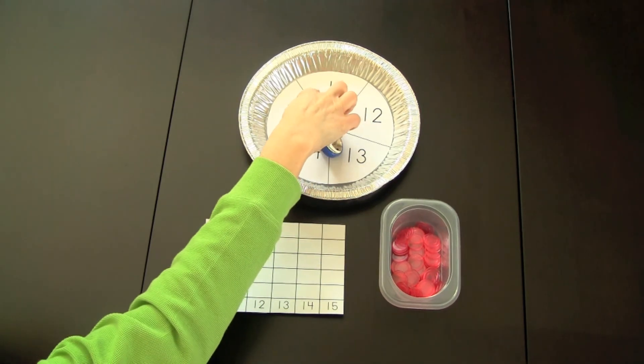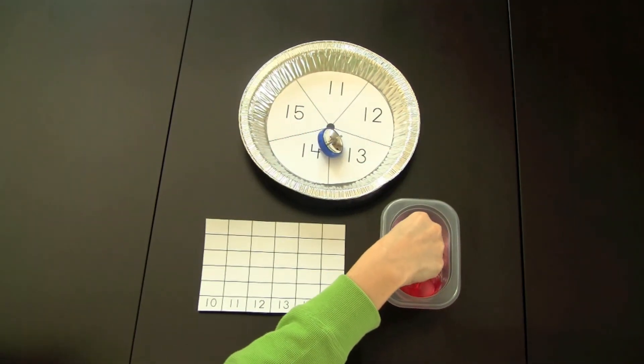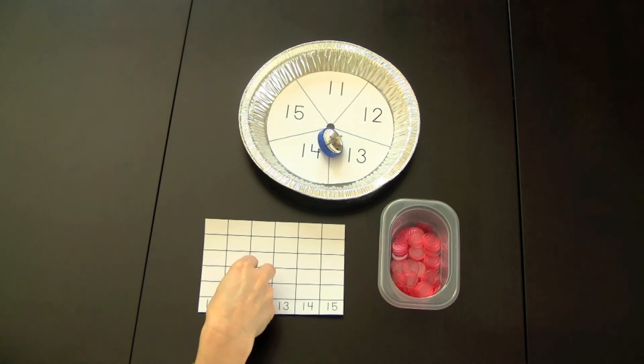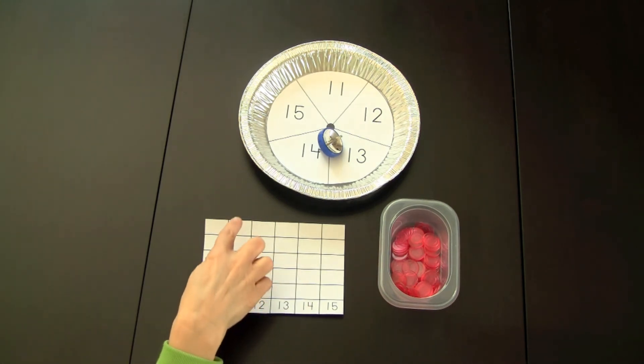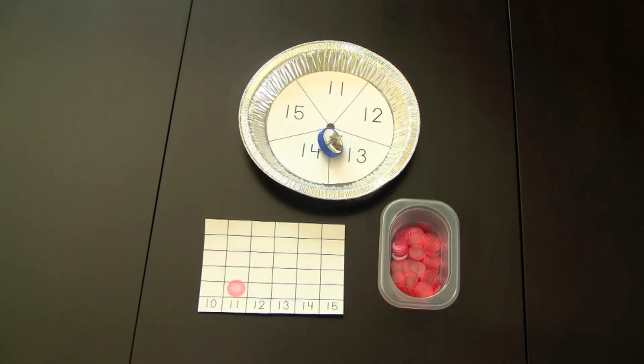For example, if it landed on number 11, they'd place their bingo chip on that number. Then player 2 would take a turn and do the same thing. The first person that has one of the grids in the graph completed would be the winner.